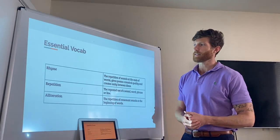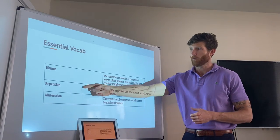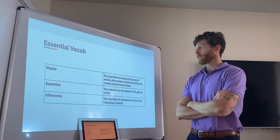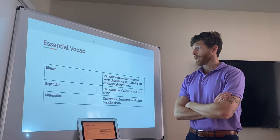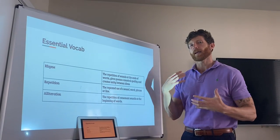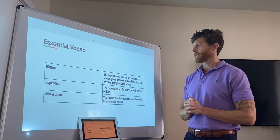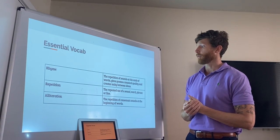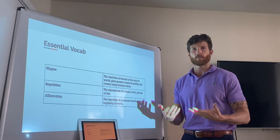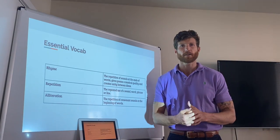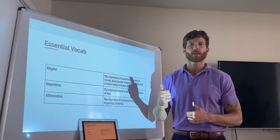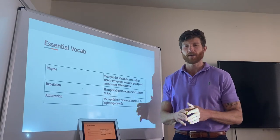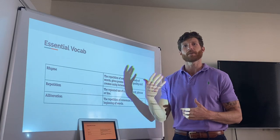Essential vocab for today's lesson: rhyme, repetition, and alliteration. Rhyme is the repetition of sounds at the end of words — these give poems a musical quality and create unity between ideas. Repetition is the repeated use of a sound, word, phrase, or line. Alliteration is the repetition of consonant sounds at the beginning of words. If we think of a tongue twister, the most famous one is 'Sally sells seashells by the seashore' — that's a perfect example of alliteration, where the consonant S is being repeated at the beginning of each word.